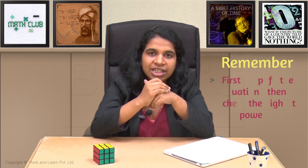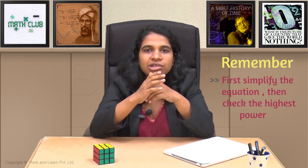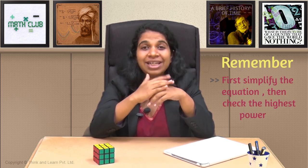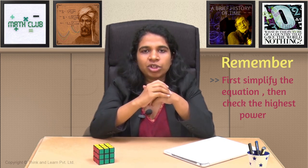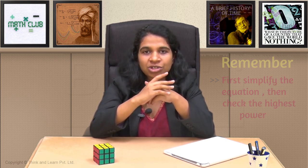So remember, always first simplify the equation. Once you have the equation in its most simplified form, only then check what is the highest power and that will give you the degree. So in the simplest form, x squared was getting cancelled. We were left with a linear equation, 9x equals minus 2. Hence, the equation given to us was not a quadratic.